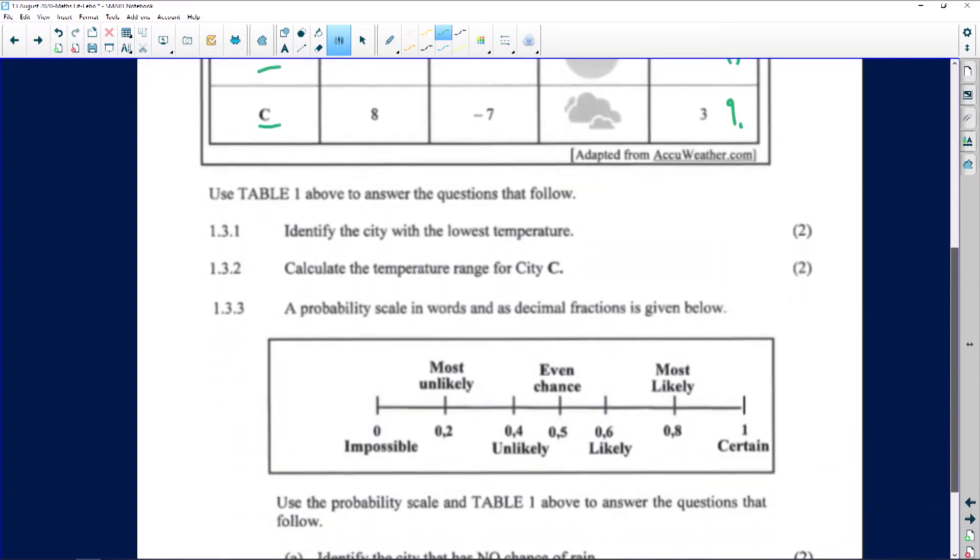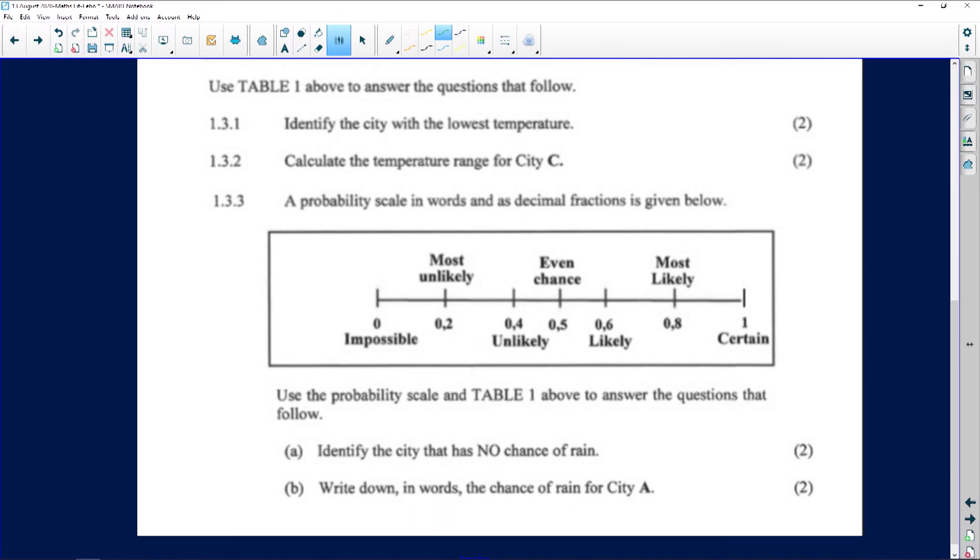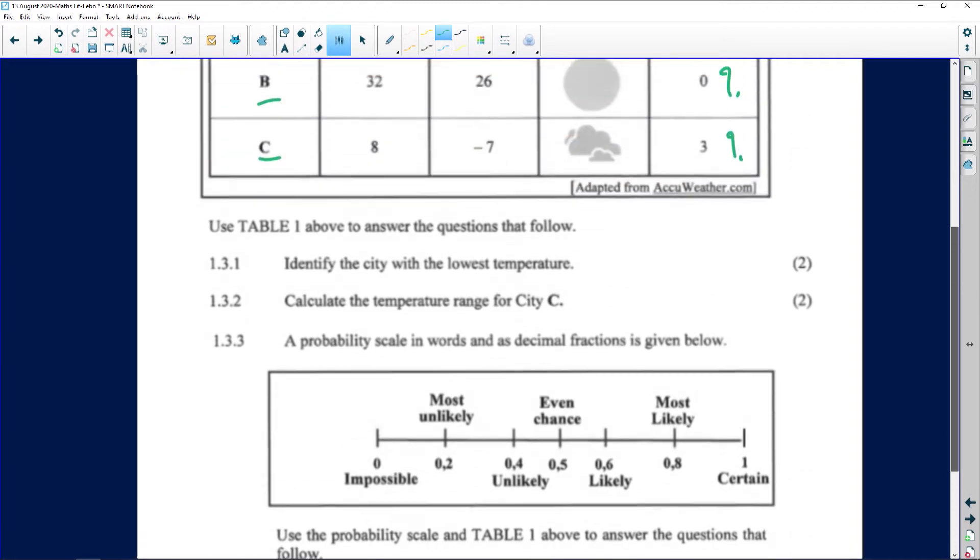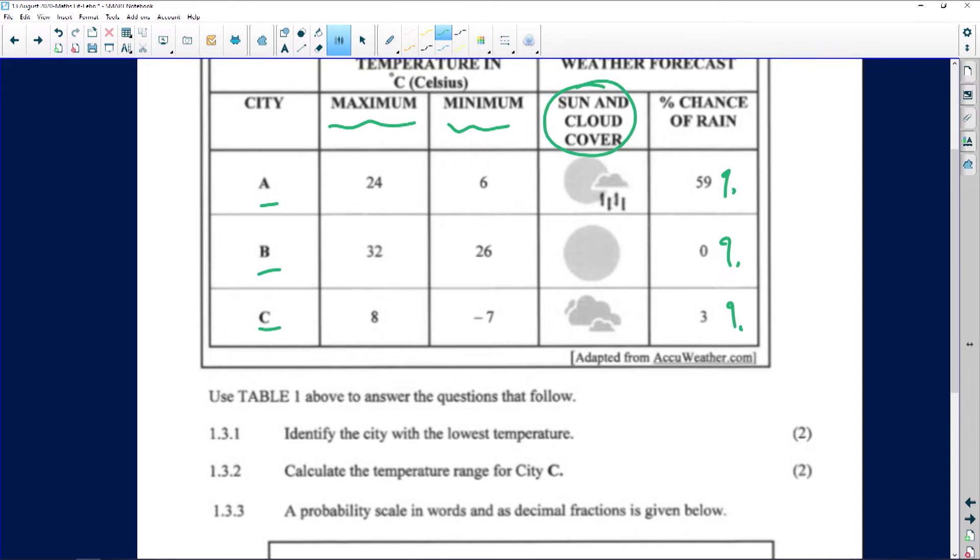Let's go down and see. I haven't even read my questions, can you see how thoroughly I go through it before I even have my questions. So it says use Table 1, which is the table above, identify the city with the lowest temperature. The city with the lowest temperature, let's go up and see. Automatically I can see that it's going to be City C and that's two marks. I'm going to write it over here, so automatically it's going to be City C, stunning.